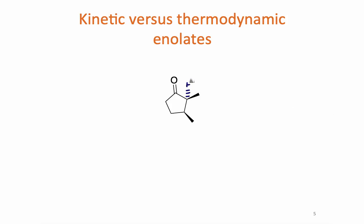The next thing we're going to look at is what's known as kinetic versus thermodynamic enolates. If you look at the ketones shown here, notice that there are two different types of protons on either side of this carbonyl group.